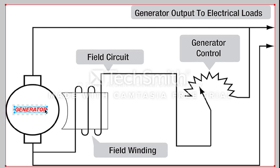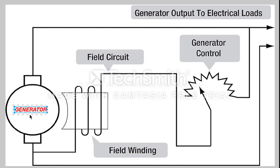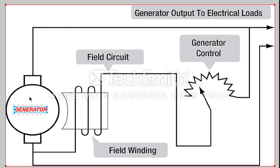The purpose of a generator is to provide a DC voltage to the output of an aircraft. A generator is a wire that's moving through what's being created here, which is a magnetic field.